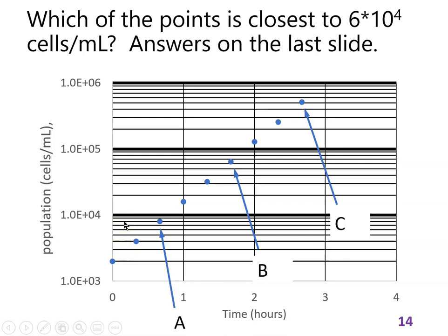The big lines on a log scale are powers of ten, and the small lines are divisions within that. So 1×10³ is one thousand, then 2,000, 3,000 … up to 10,000, which is 1×10⁴. Each subsequent line adds another 10,000, giving 10,000, 20,000, 30,000, 40,000, 50,000, 60,000. That 60,000 is 6×10⁴, and point B is right there — B is closest to 6×10⁴.